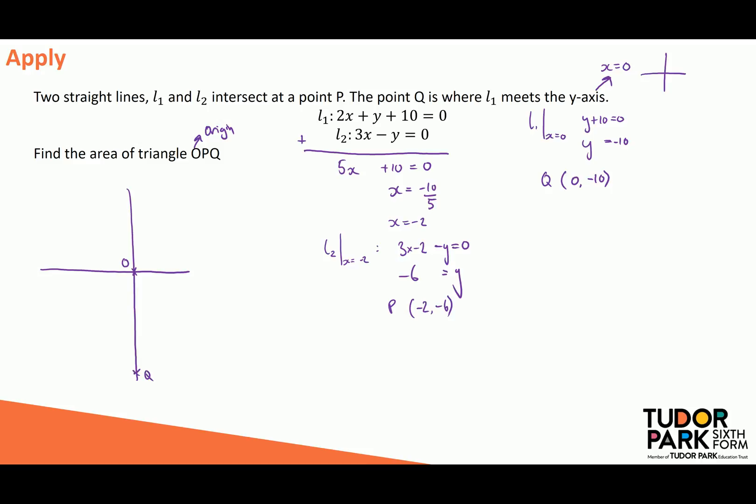I've got my point P, which was at negative 2, negative 6, so negative 2, negative 6. Let's say that's a point here, which is P. And I want to look at the triangle that's formed there between OP and Q.